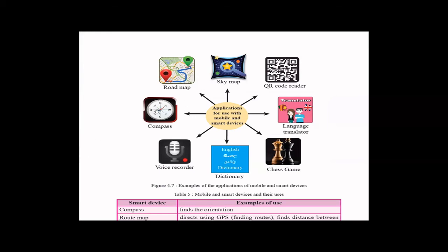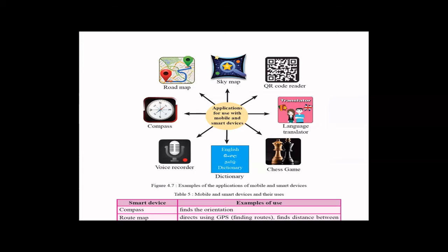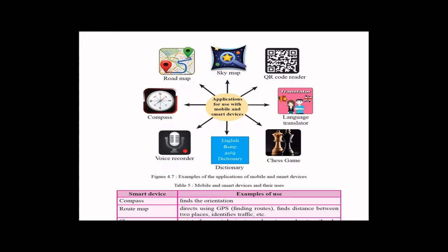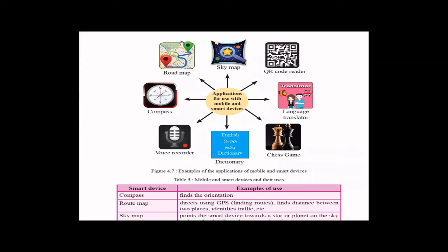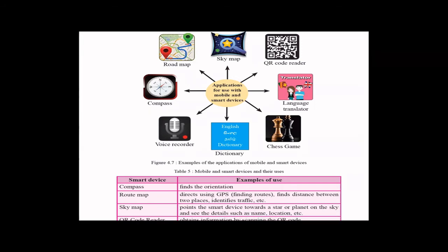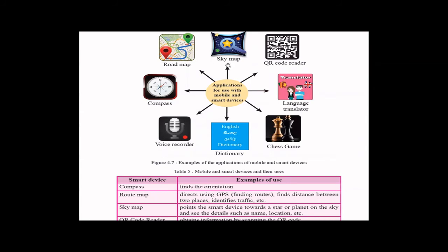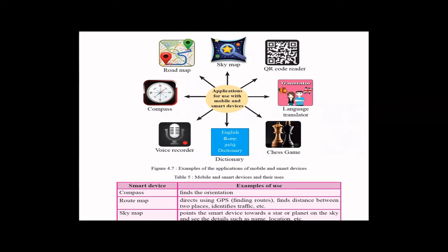Compass, it's to find directions. Like the normal compass, from this device you can find where it's north, where it's south, like that. And then you have a route map or some kind of Google Maps. You can find directions. You can find distance between places using the GPS as well. And then comes the sky map. It's a very interesting application where you can point to a star or planet in the sky, and you can see the details of that particular star or the planet.